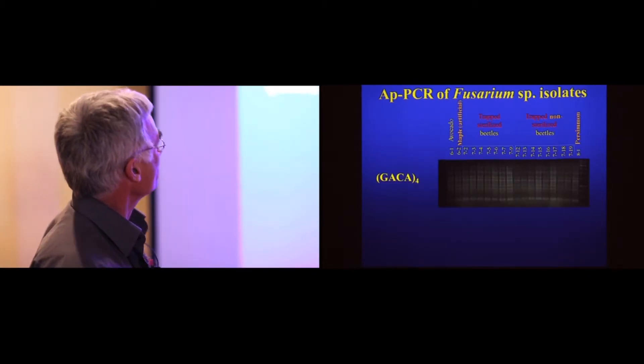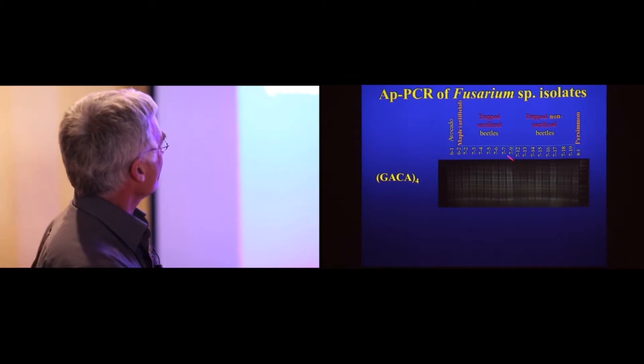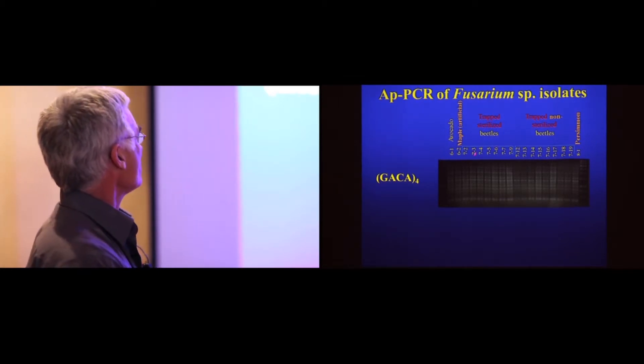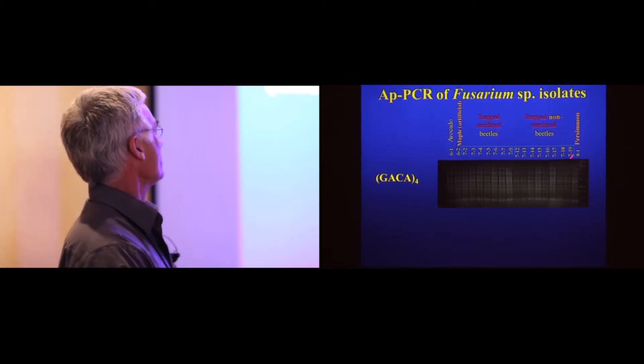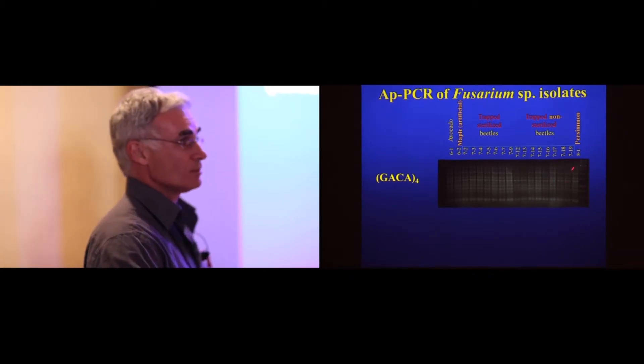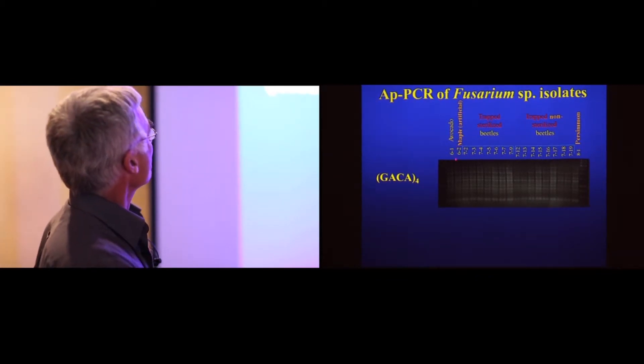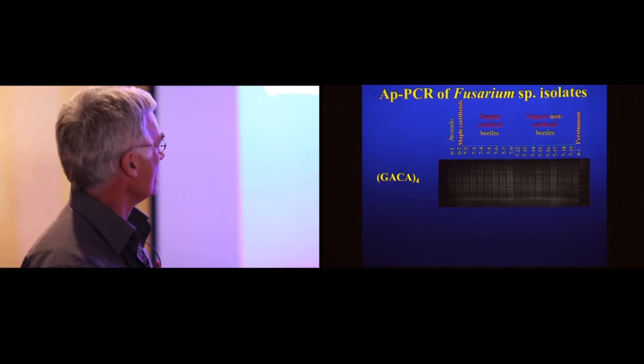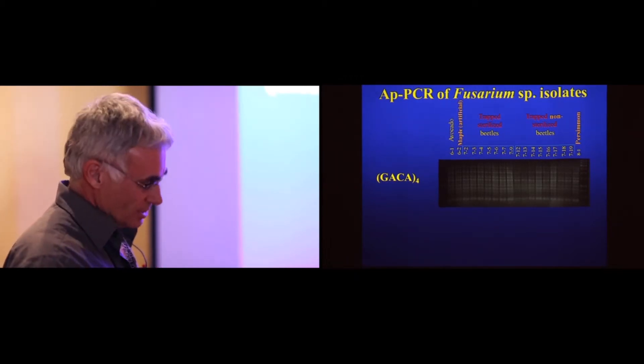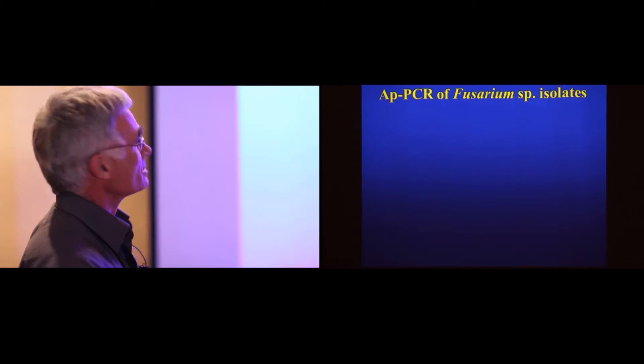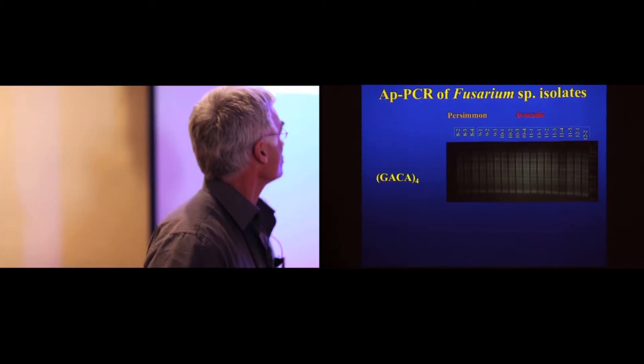Again, this becomes boring, but I'll just show you that we have trapped sterilized beetles, trapped non-sterilized beetles from persimmon as well, which is our non-host, and from the Acer. Again, very uniform banding patterns, indicating that we have a clonal population.